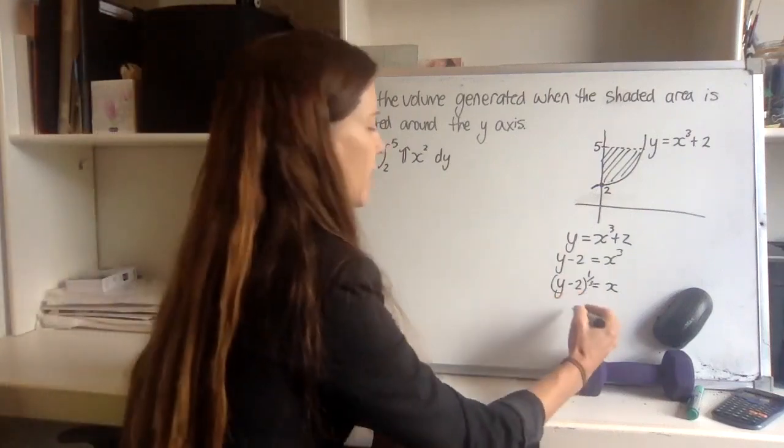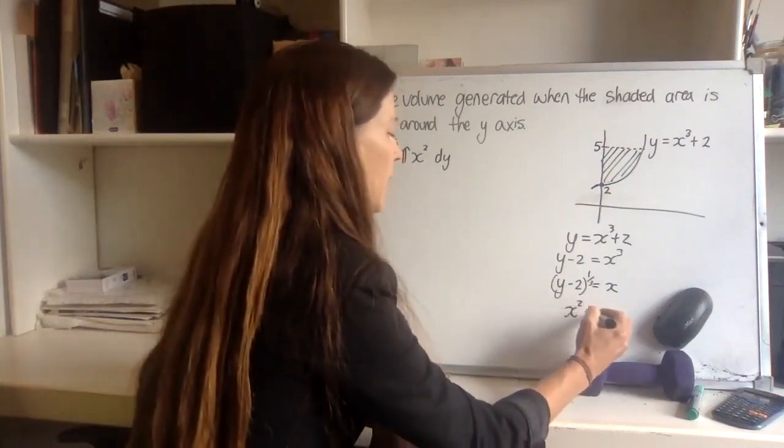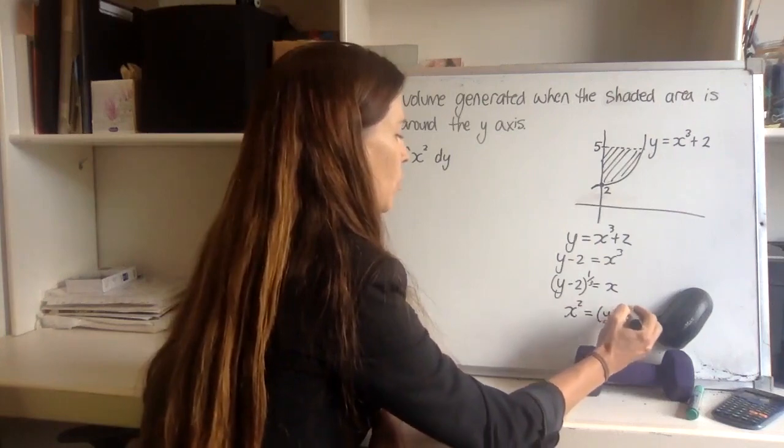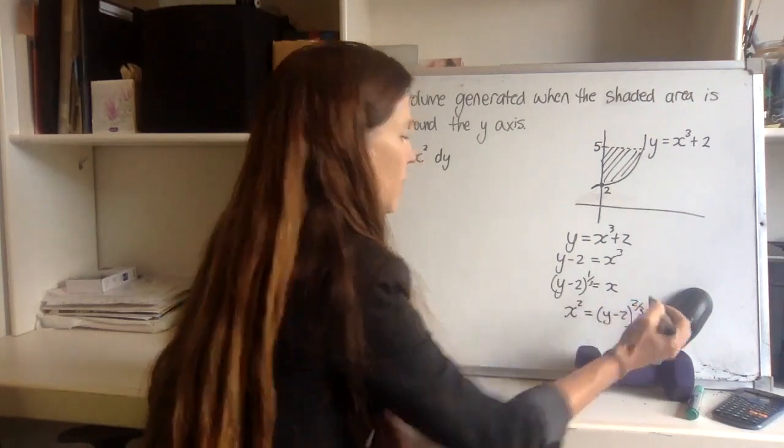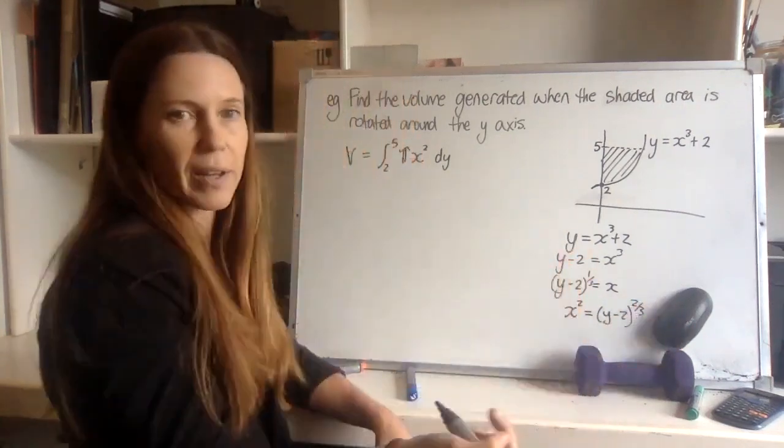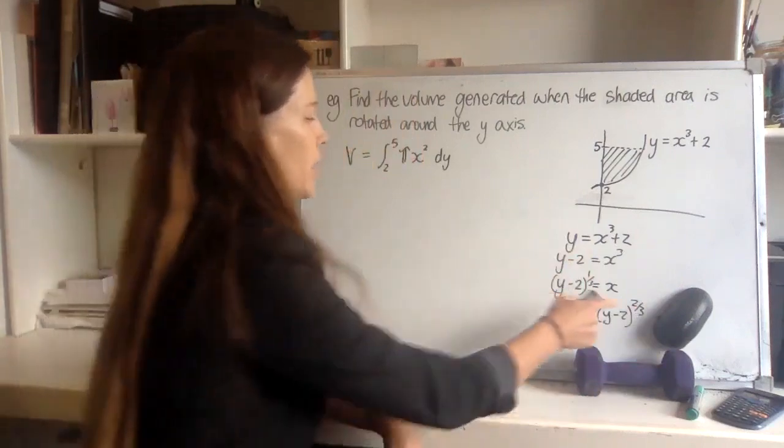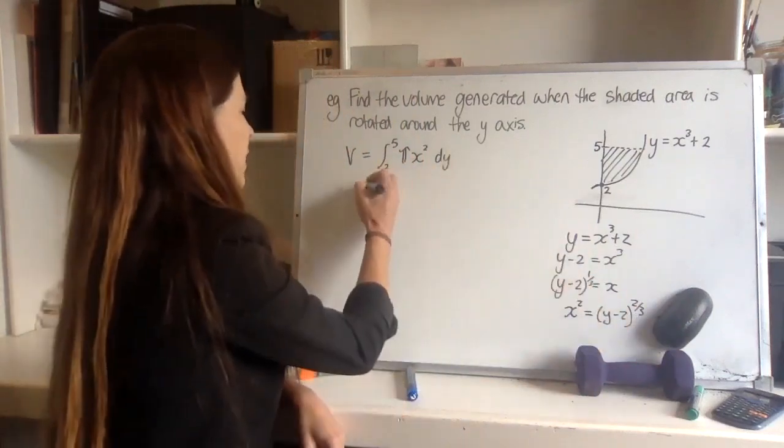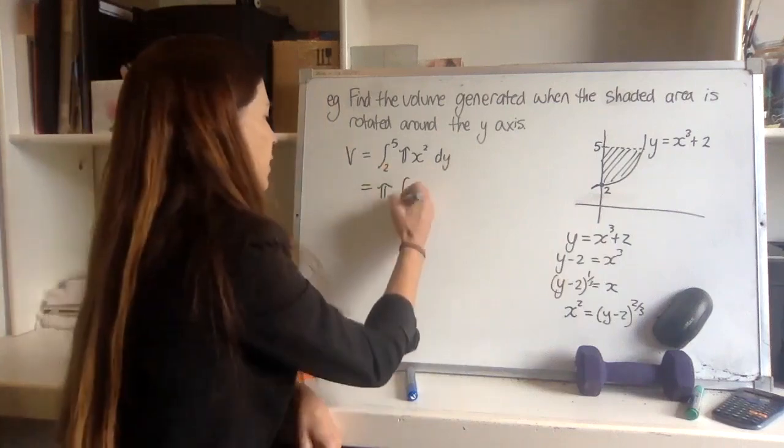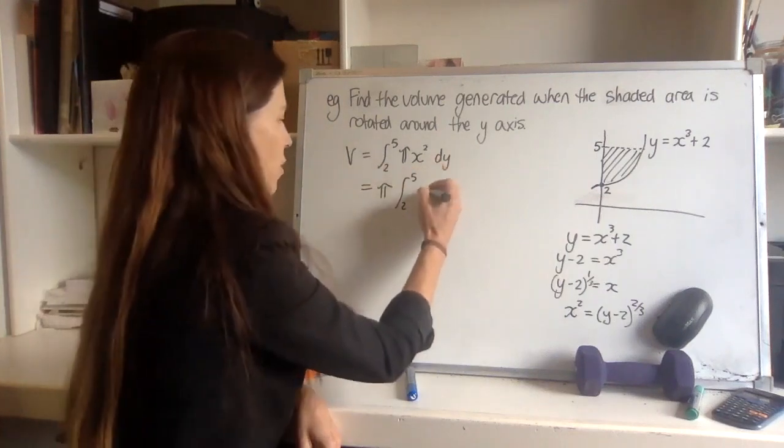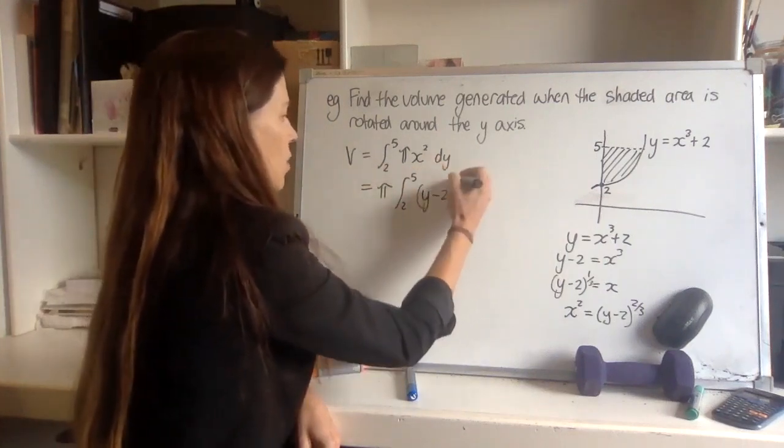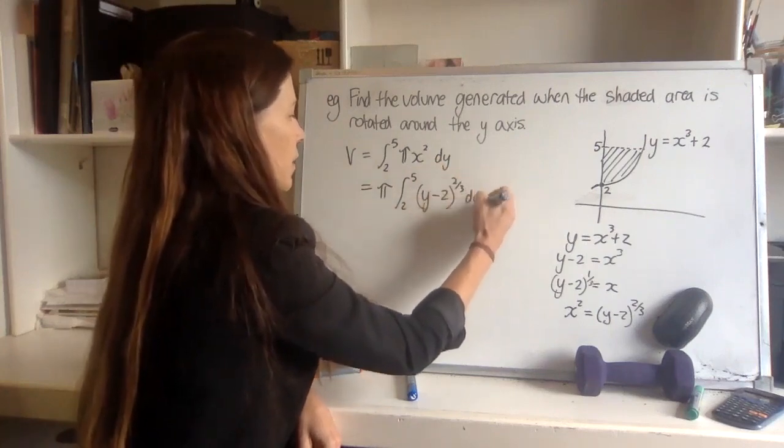And then to square both sides here, I can see that x squared will be y minus 2 to the power of two-thirds, because if I'm raising a power to another power, I multiply the powers. So now I can go ahead and sub that in over here. At this point, I might bring my pi out the front, and we've got y minus 2 to the two-thirds dy.